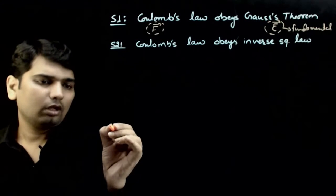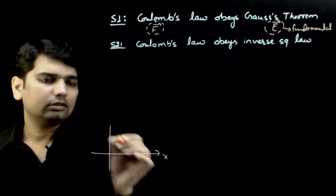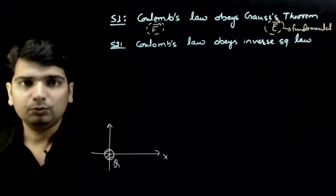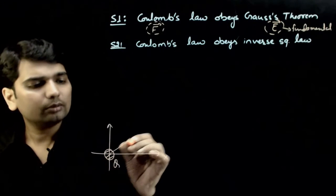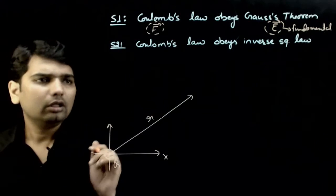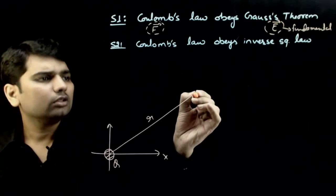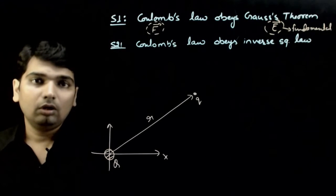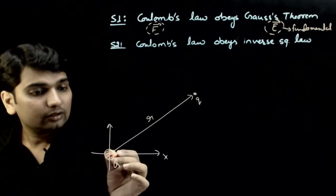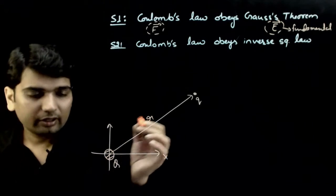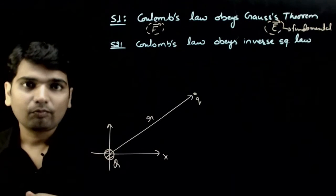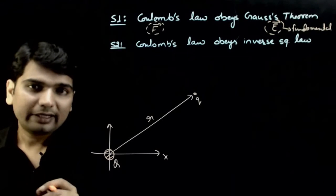Imagine this: we have an x-axis and y-axis, and a charge of capital Q. If we have a large distance — say, small r is very large — and a charge small q is placed there. If force were fundamental, then the electrostatic effect of charge Q reaching that point should take some time, since nothing can travel faster than the velocity of light.